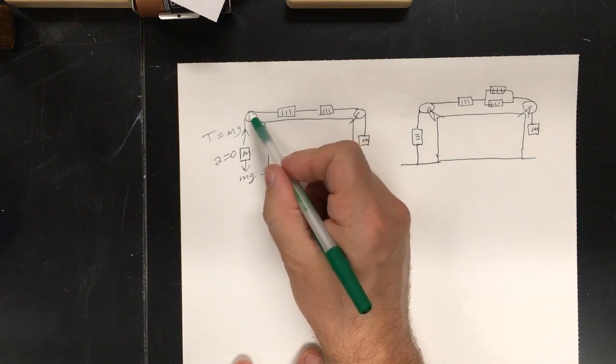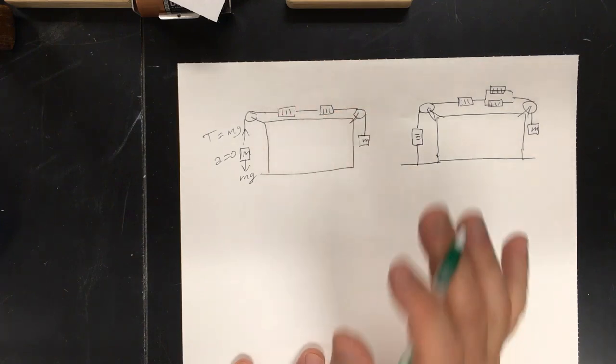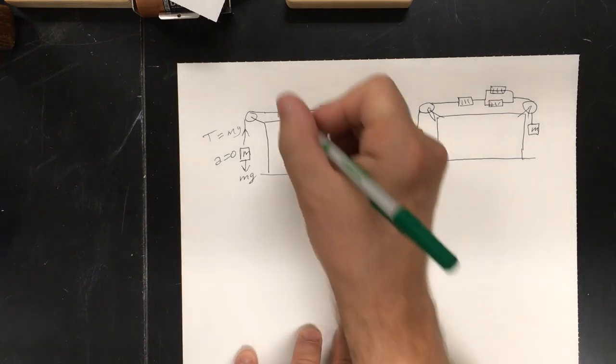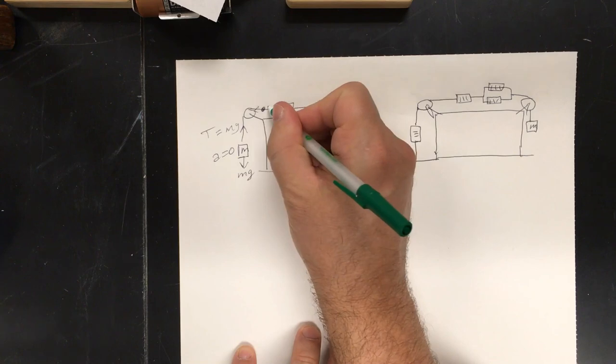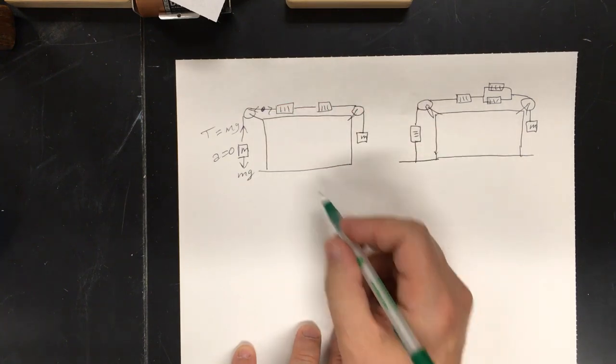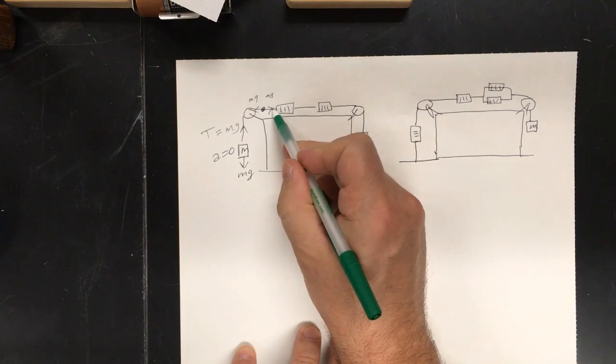Well, then if this point is not moving, then the tension here must be mg. So, what you need to do is take points everywhere. So, if we take a point here and we do the force diagram, there's going to be two forces. They're both going to be mg.